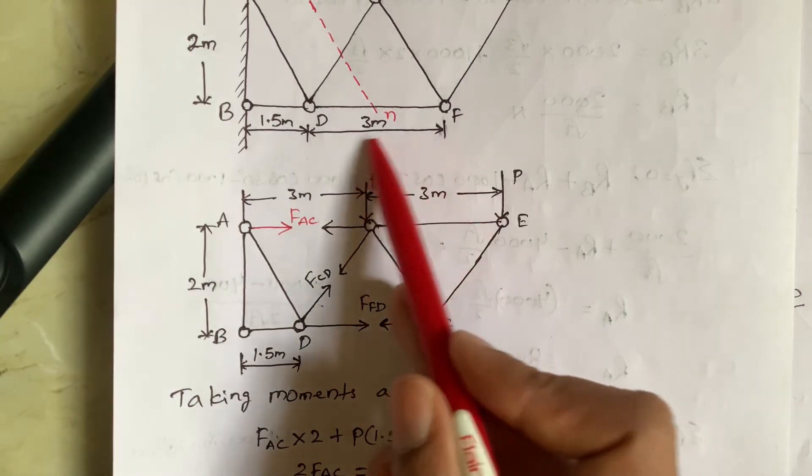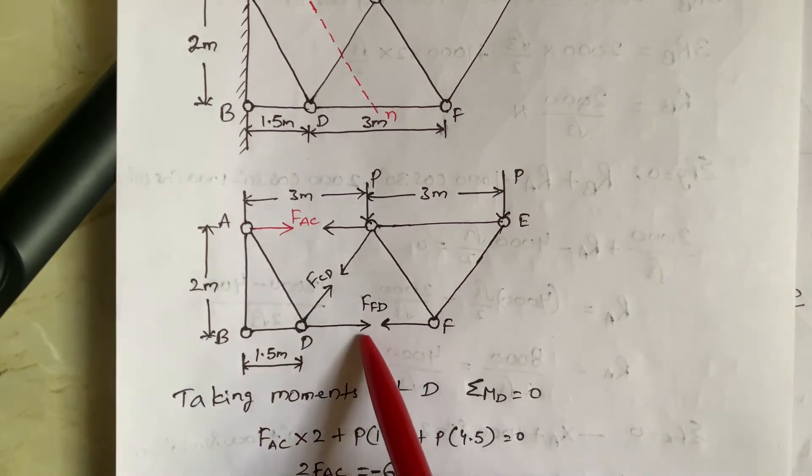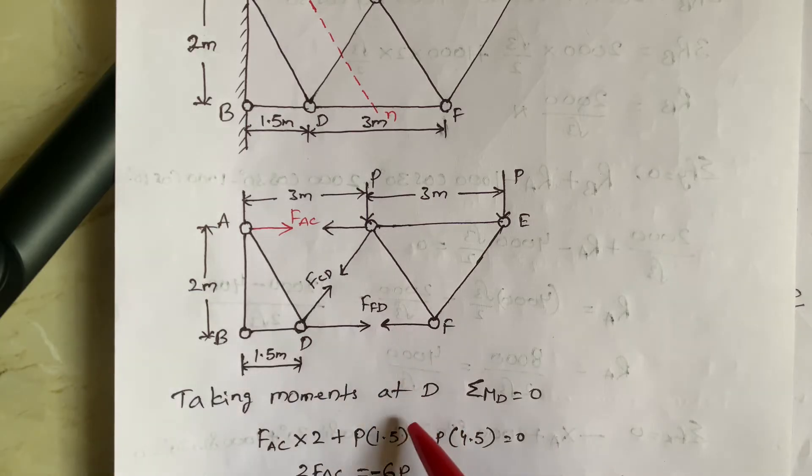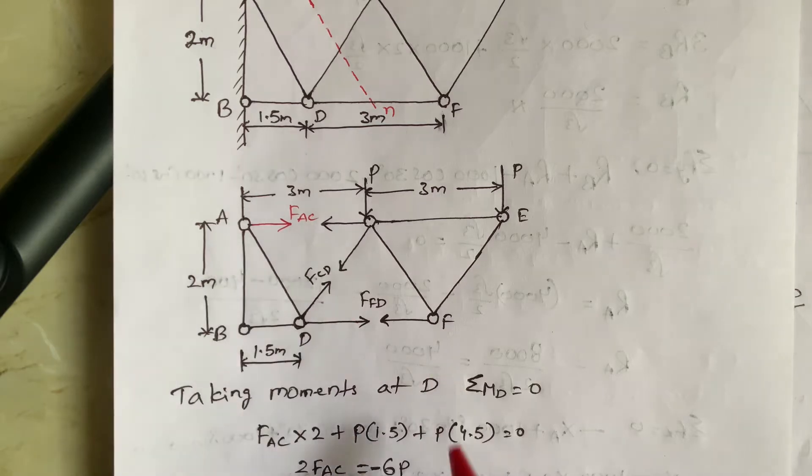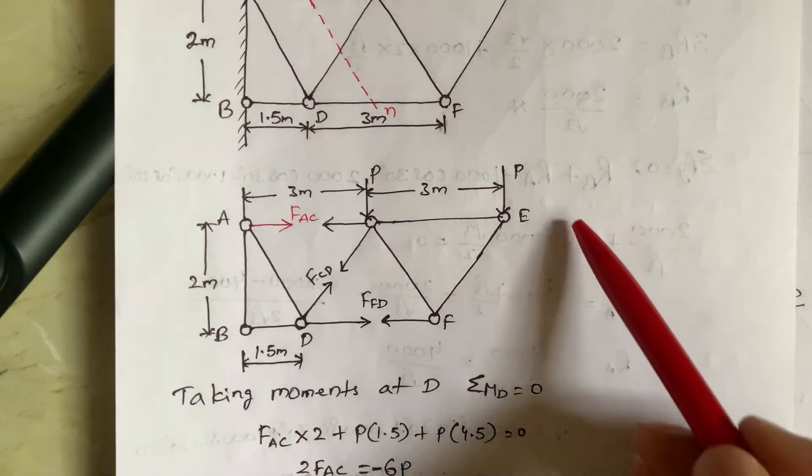Because this total distance is 3 meters, half of the distance is 1.5. So force is P and perpendicular distance is 1.5 from point D. So P into 1.5.